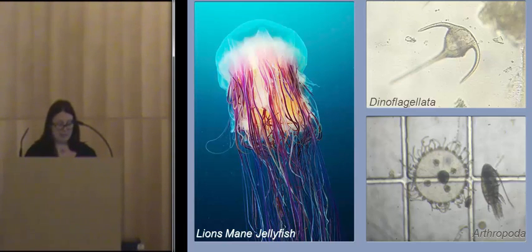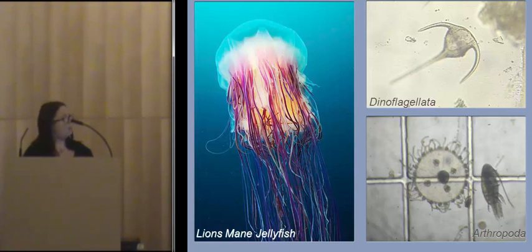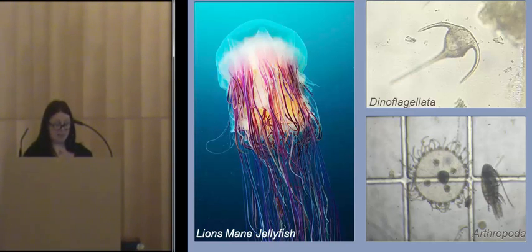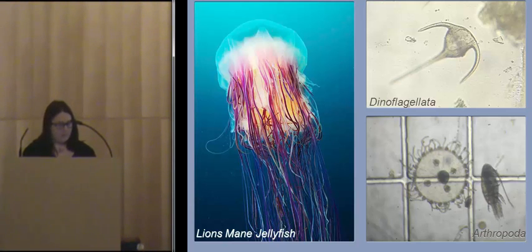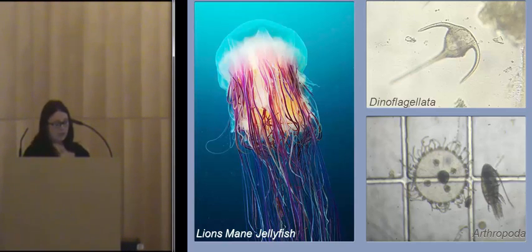We typically imagine plankton to be microscopic organisms that are unable to be seen with the naked eye. However, zooplankton can vastly range in size — from below 20 micrometres, known as nano-zooplankton, up to mega-zooplankton. Species in the mega-zooplankton category are typically larger than 20 millimetres. Jellyfish are classed as zooplankton as they are unable to swim against the current.